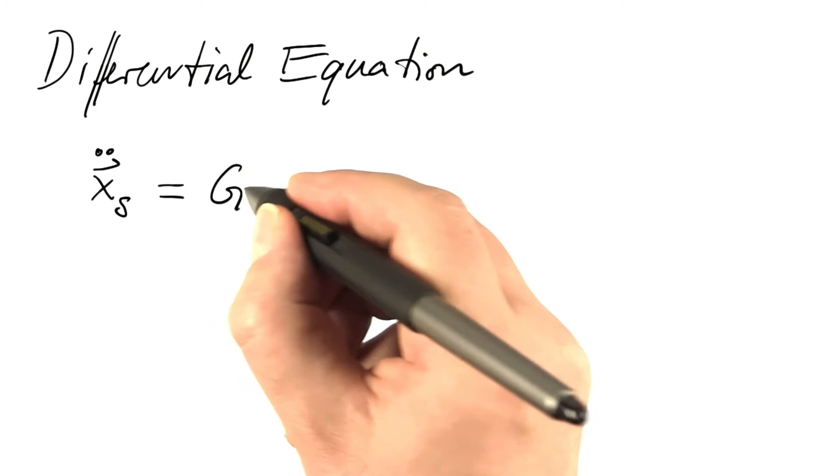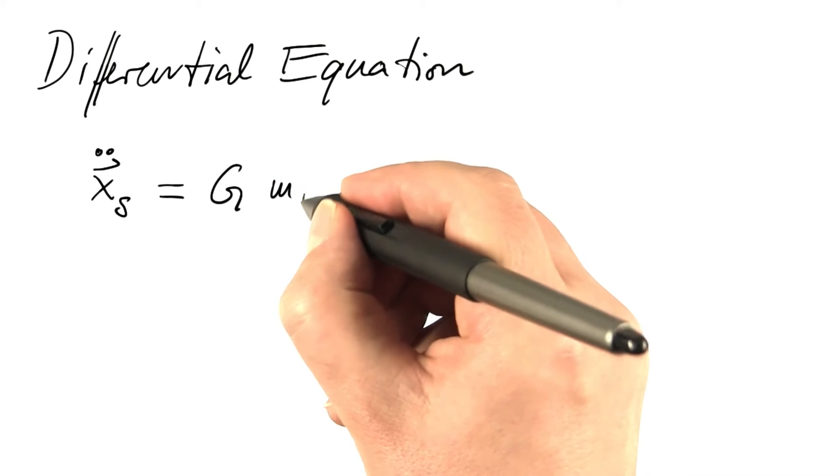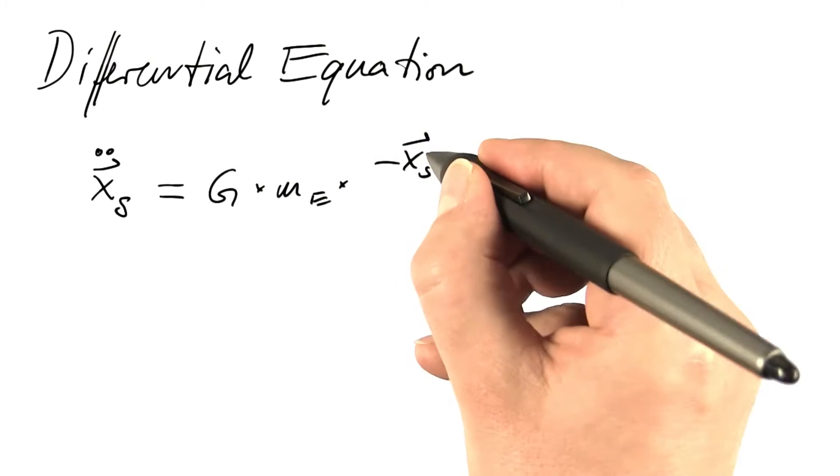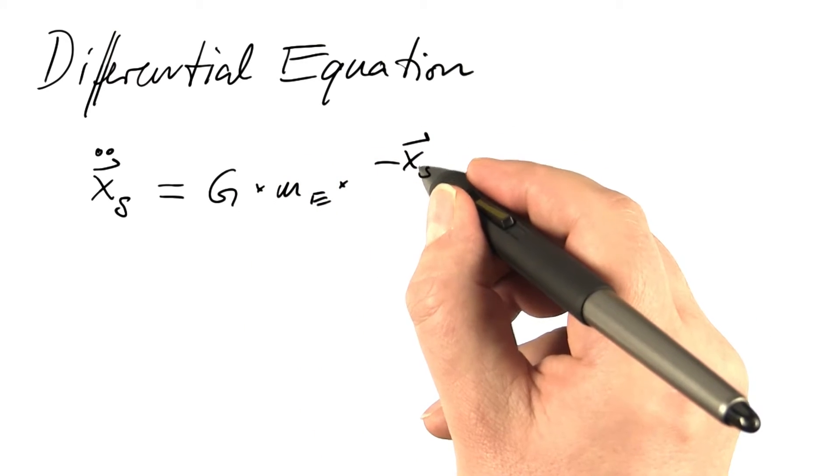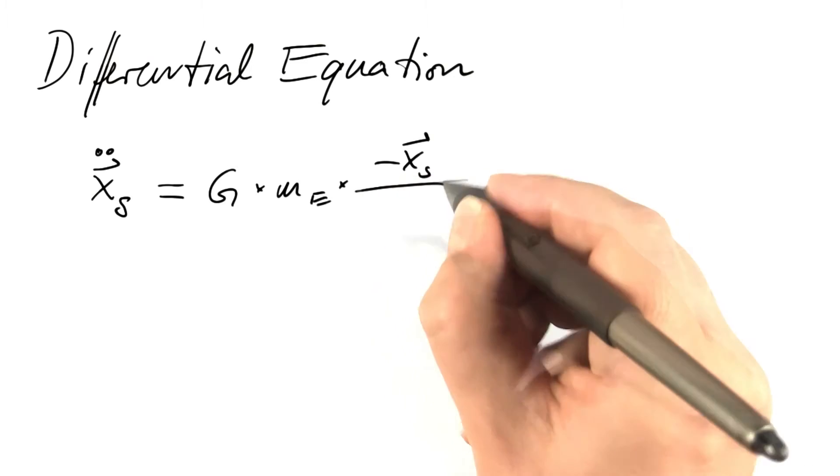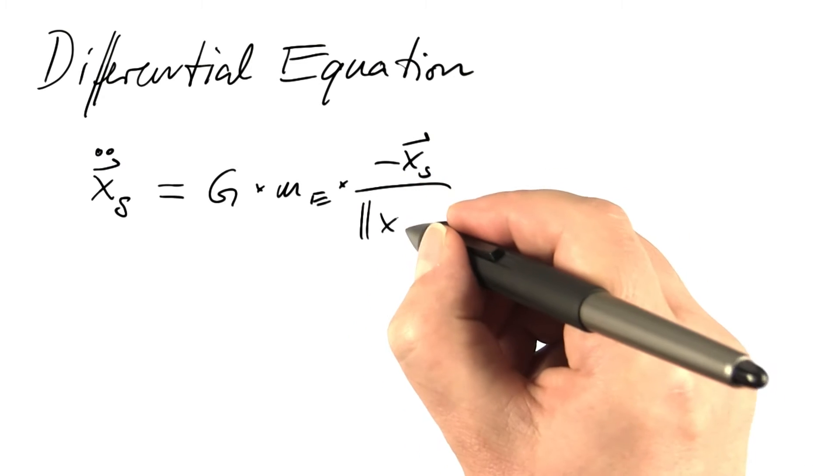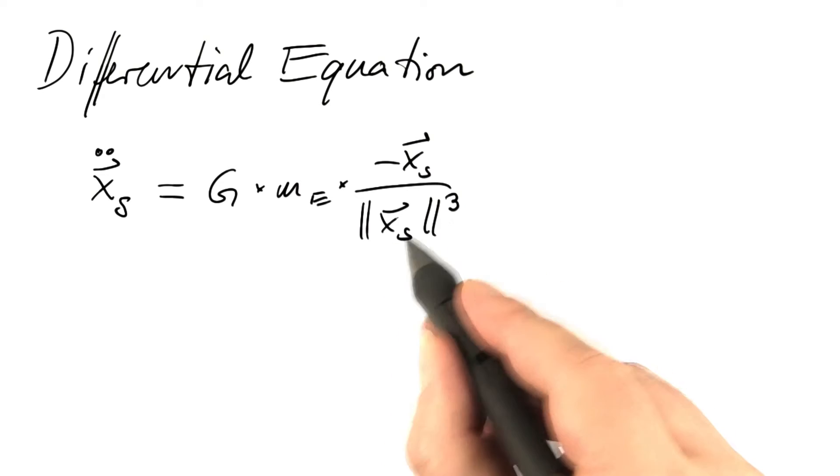equals the gravitational constant times the mass of the Earth times a vector that points from the spacecraft to the Earth divided by the third power of its length. This boils down to the third power of the distance between the spacecraft and Earth.